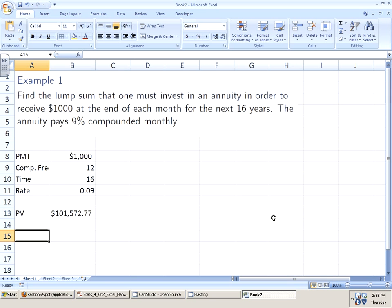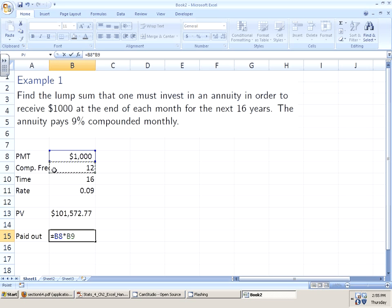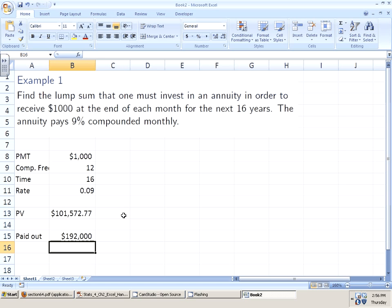Well something that's useful to analyze is how much is actually paid out to the person. Well they're going to receive $1,000 a month for 12 months each year for 16 years. They actually get out $192,000 but they only have to have $101,572.77 at the beginning of the time period.